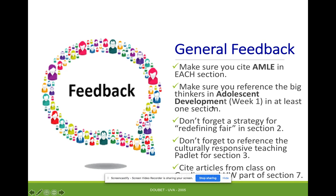So the rest of you, go back, look at that stuff about adolescent development and work it into at least one section. I saw that many of you — not all — forgot a strategy for redefining fair in section two. There are some things at the end of chapter one in the Doubet and Hockett book you can look at for that. Another pattern: don't forget to reference the culturally responsive teaching padlet for section three.